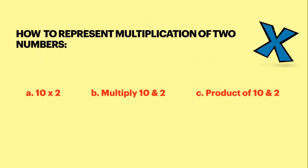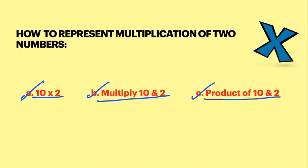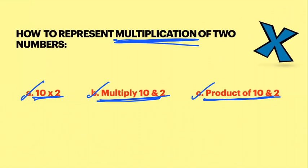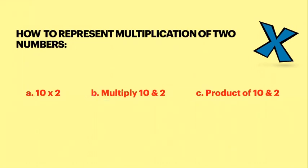First, let's understand how multiplication of two numbers is represented. There are three ways: you can be given ten into two directly, or told to multiply ten and two, or asked what is the product of ten and two. All three mean you have to do multiplication. Knowing your multiplication tables is very important to solve these problems.